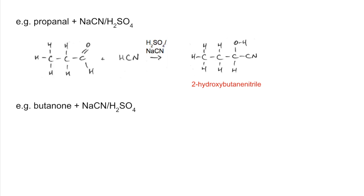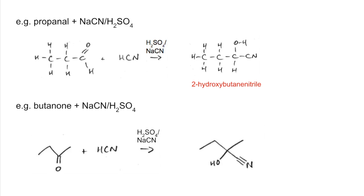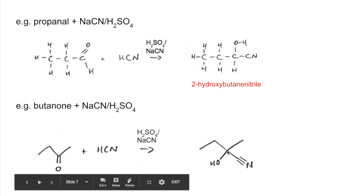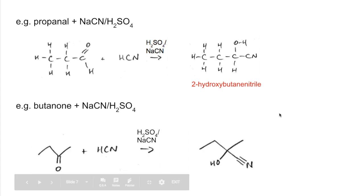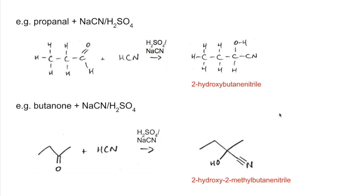For the second example, butanone reacts with sodium cyanide and sulfuric acid. Again, HCN is used in the equation — H goes onto the oxygen and CN goes onto that carbon. The product in skeletal formula has a longest continuous chain of four carbons, so it's a butanenitrile. There's a hydroxy group and a methyl group both on carbon number two. Using the alphabet rule, hydroxy comes before methyl, so the product is called 2-hydroxy-2-methylbutanenitrile.